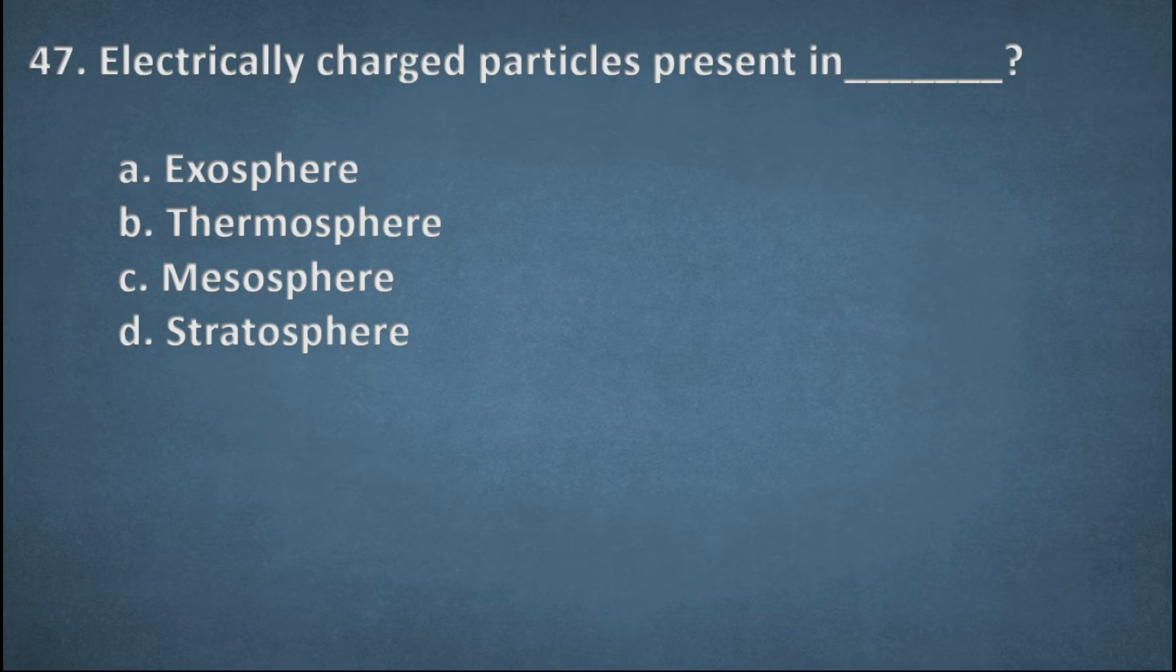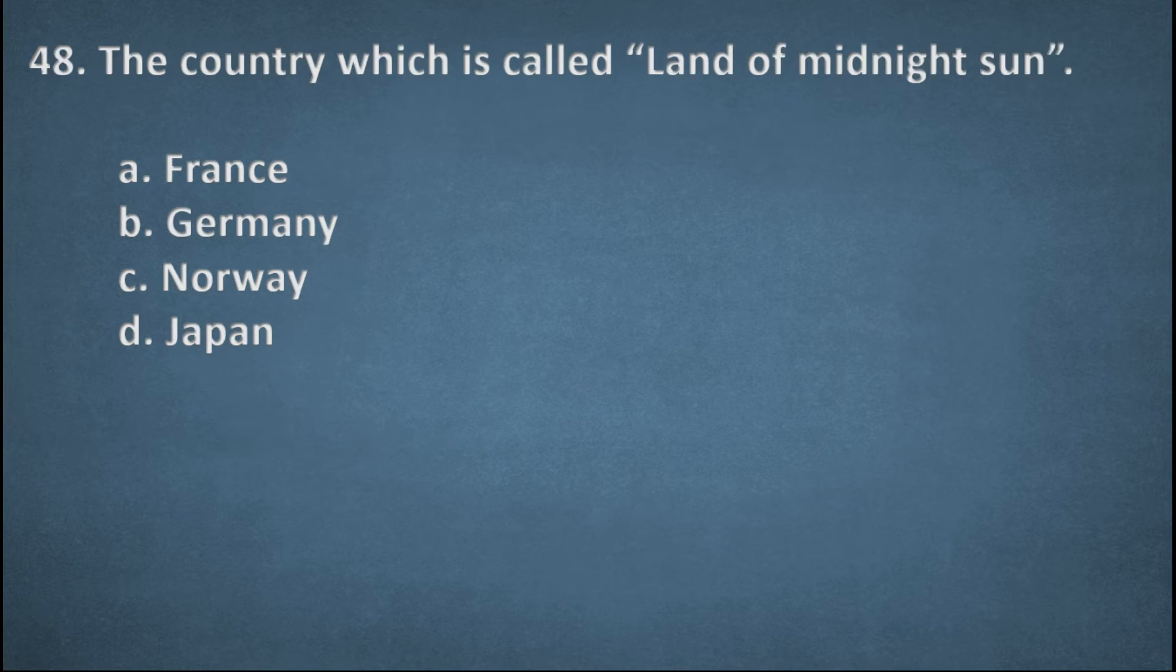Next one. Electrically charged particles present in. Options: Exosphere, Thermosphere, Mesosphere, Stratosphere. The right option, B, Thermosphere. Next one. A country which is called land of midnight sun. Options: France, Germany, Norway, Japan. The right option, C, Norway.